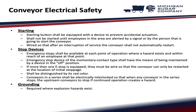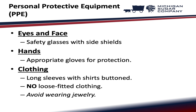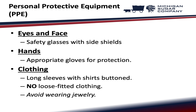Conveyors in a series shall be electrically interlocked so that when any conveyor in the series stops, the upstream conveyors also stop if continued operation creates a hazard. Grounding is required where explosion hazards exist. PPE requirements include: safety glasses with side shields for eyes and face, appropriate gloves for hand protection, and long sleeves with shirts buttoned — no loose-fitting clothing, and avoid wearing jewelry.